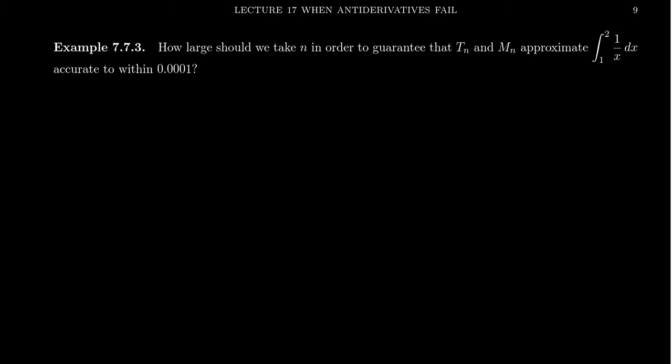So specifically, how large should we take n in order to guarantee that the trapezoid rule and the midpoint rule can approximate the integral 1 to 2, 1 over x dx, accurate to 0.0001? That's why we want to be accurate to four decimal places. How can we guarantee that level of precision?